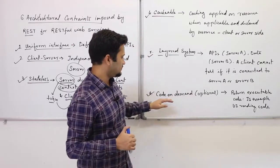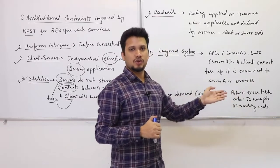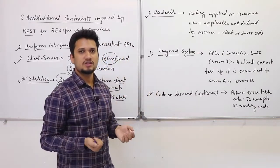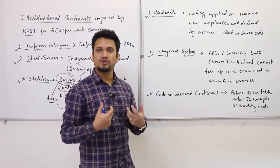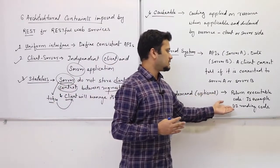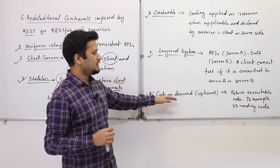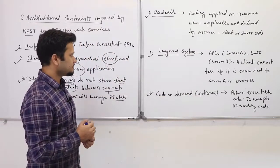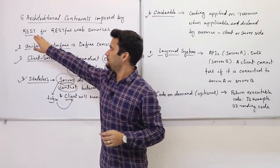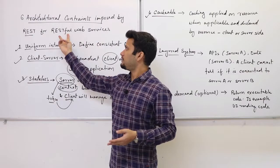The sixth is an optional constraint: Code on Demand. You are not required to implement this. It means you can return executable code — for example, when accessing some web resources you normally get a static response like user information, but you can also have the server send JavaScript code that the client can use to render UI. These six constraints are imposed by REST, and if you adhere to all six, your web services can be called RESTful.